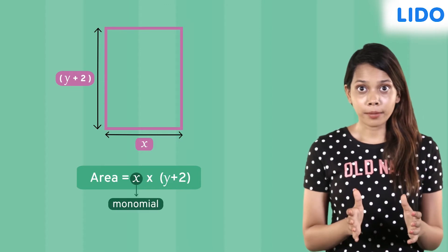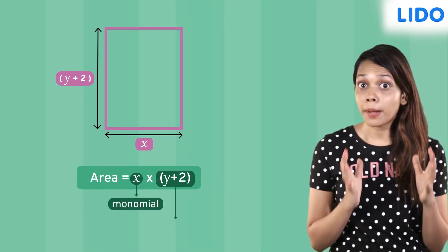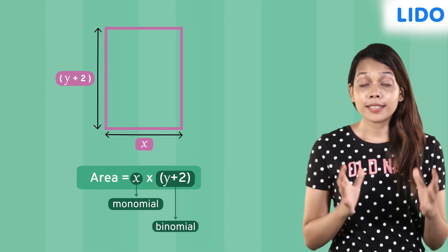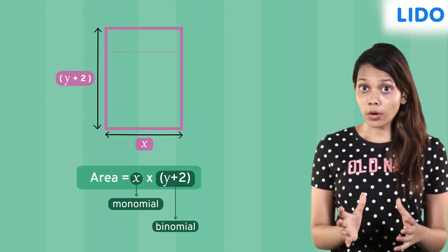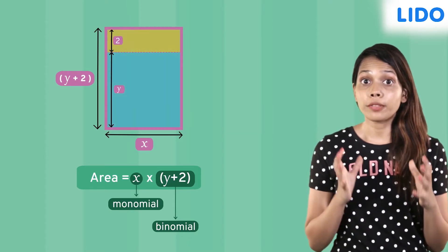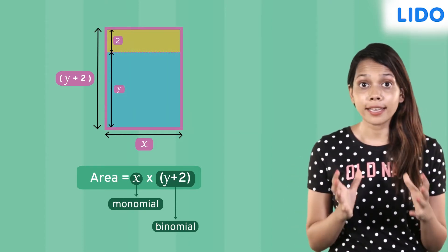x is a monomial and y plus 2 is a binomial. The area is a product of a monomial by a binomial. Each term of the binomial represents a part of the breadth of the rectangular dining area.